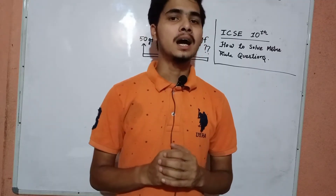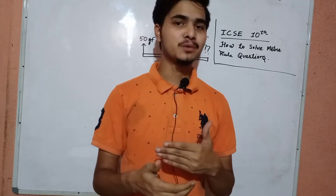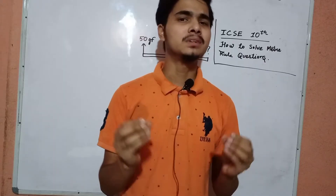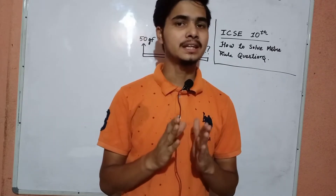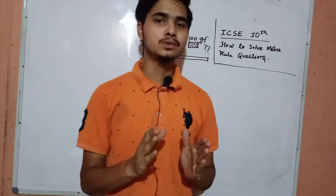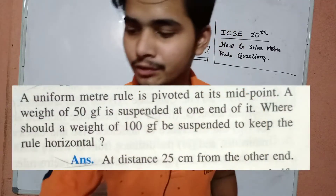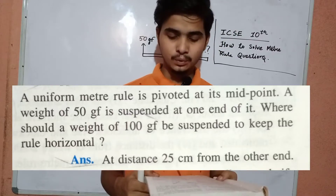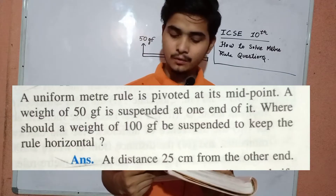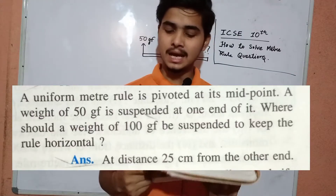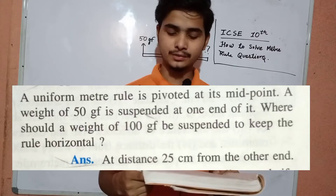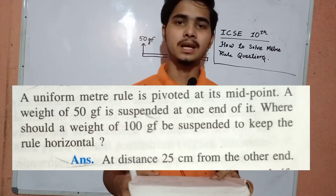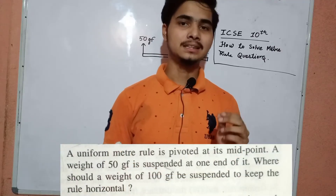These are not hard questions — the concepts are very easy if you understand carefully. So the first question will appear on your screen. Let me read it for you: 'A uniform meter rule is pivoted at its midpoint. A weight of 50 gram force is suspended at one end of it. Where should a weight of 100 gram force be suspended to keep the rule horizontal?'